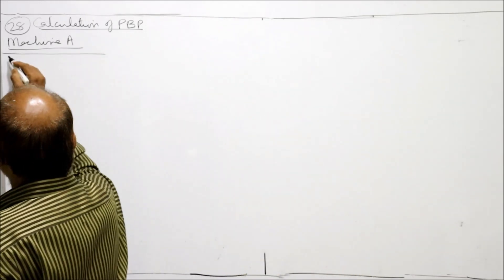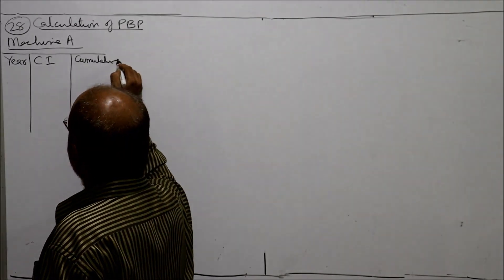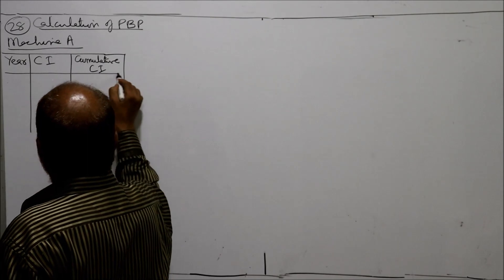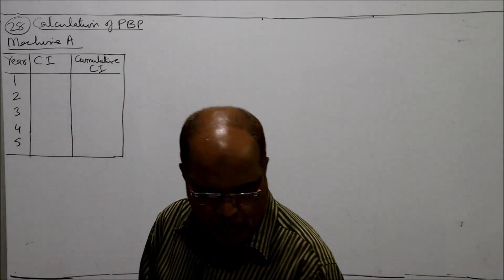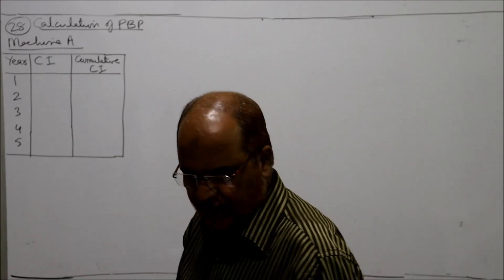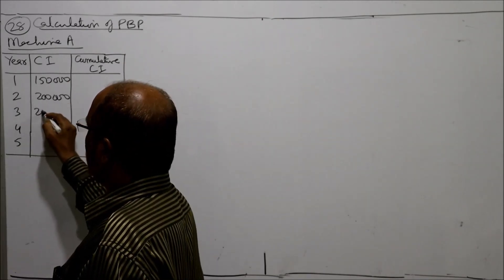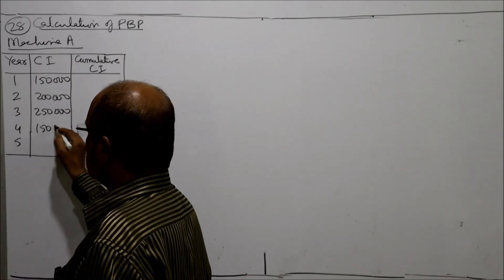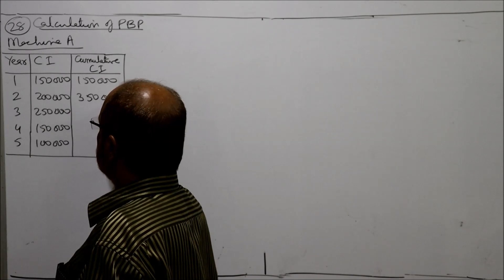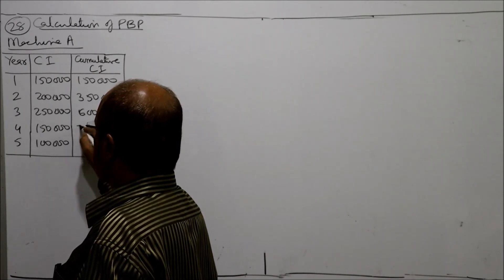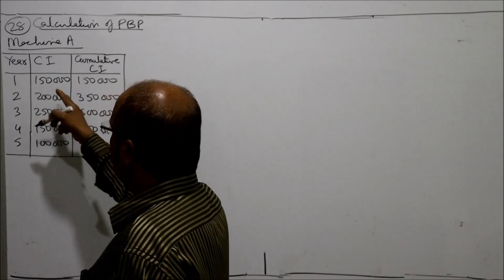The cumulative cash inflows for machine A are: one lakh fifty thousand at end of year 1, three lakh fifty thousand at end of year 2, six lakh at end of year 3, seven lakh fifty thousand at end of year 4, and eight lakh fifty thousand at end of year 5. Initial investment is five lakh rupees.